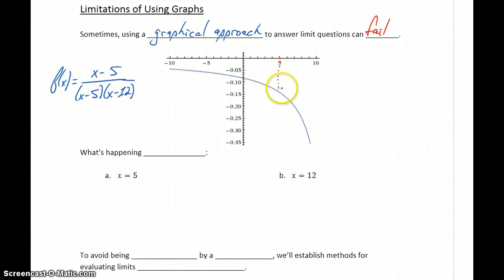our function will be undefined. So technically, we should have an open circle at x equals 5 to indicate that.